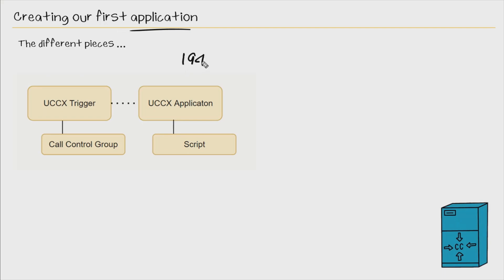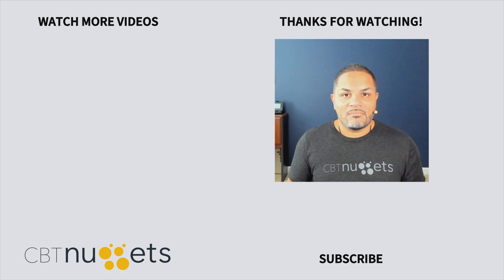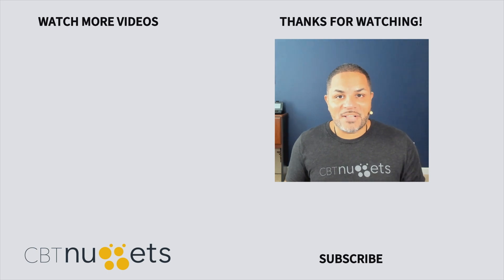In this nugget, we went through the steps of creating our first application, and we also verified that it does indeed work because we dialed 1940 — the directory number of our trigger or CTI route point — and we heard that script being executed successfully. I hope it's been informative for you. Thank you for viewing.